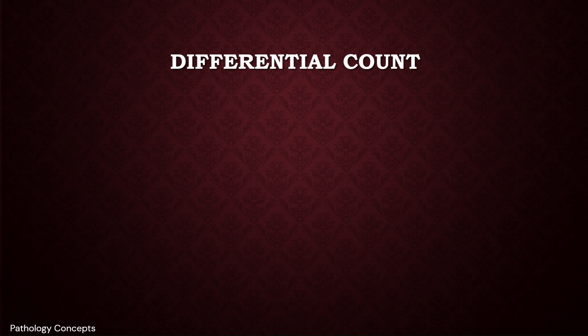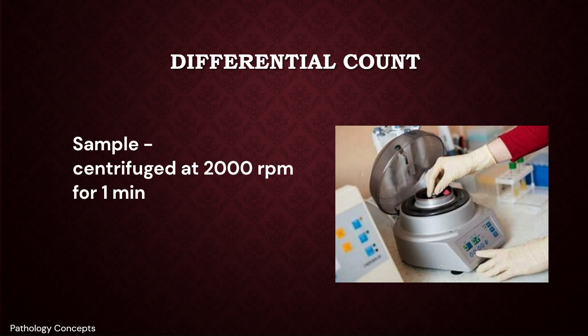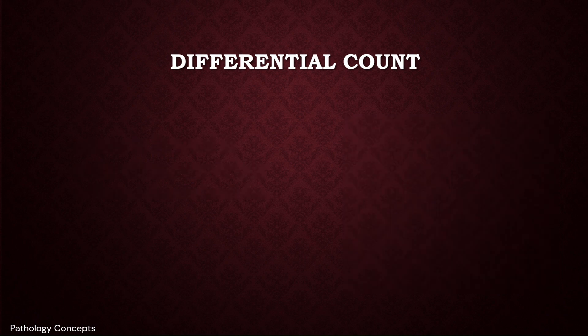For the differential count, centrifuge the sample at 2000 RPM for 1 minute. If RBCs are more, add a little acetic acid before centrifugation to lyse the RBCs. After centrifugation, a smear is formed from the sediment and stained appropriately with Leishman's stain. The smear is then observed under the microscope.